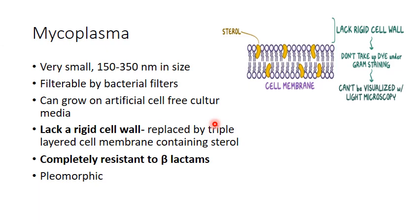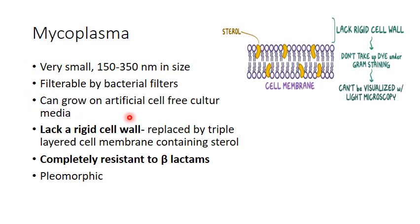Moving on to Mycoplasma. Mycoplasma are very small in size, approximately 150 to 350 nanometers, and they are also filterable by bacterial filters. Because of these two properties they resemble viruses, but because they can grow on artificial cell-free culture media, they are considered to be bacteria.